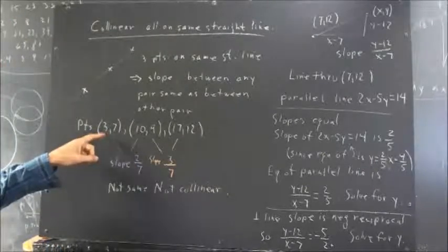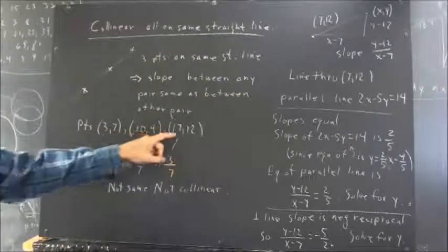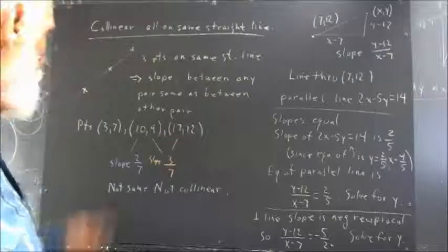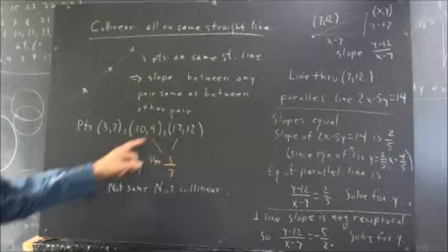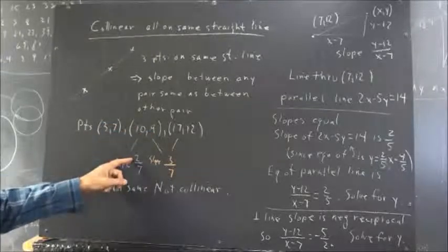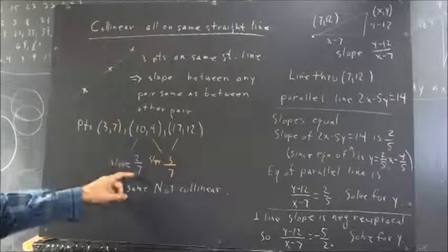Okay, our points are 3, 7, 10, 9, and 17, 12. Now, between these two points, it's very straightforward to calculate that the slope is 2/7. 9 minus 7 is 2, that's the rise. 10 minus 3 is 7, that's the run.